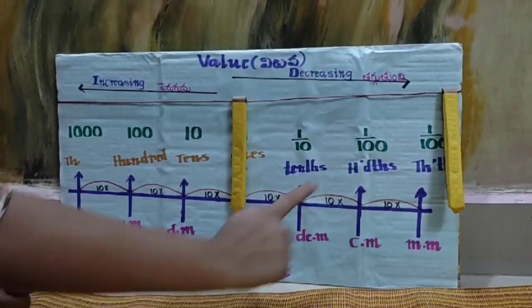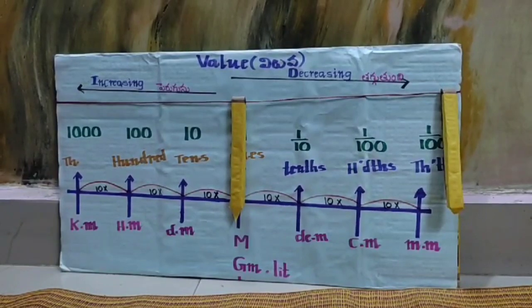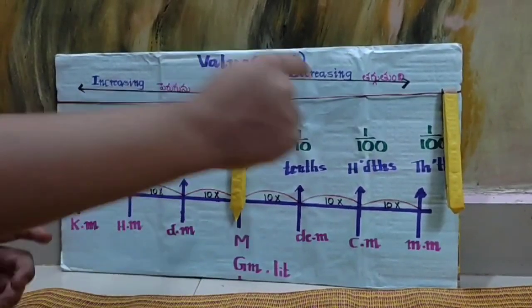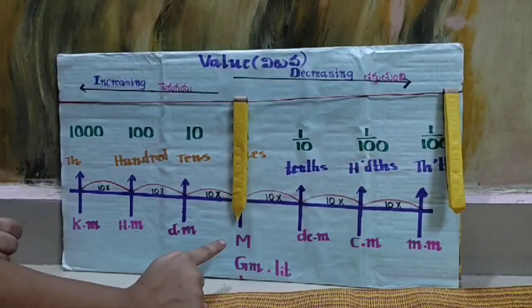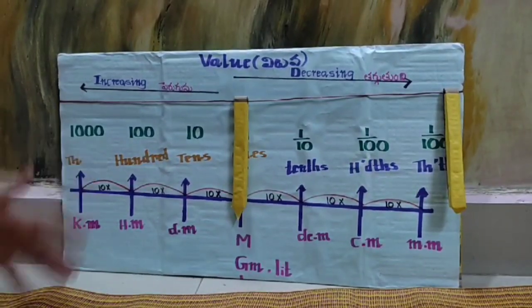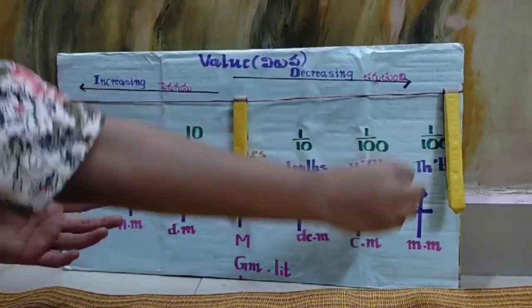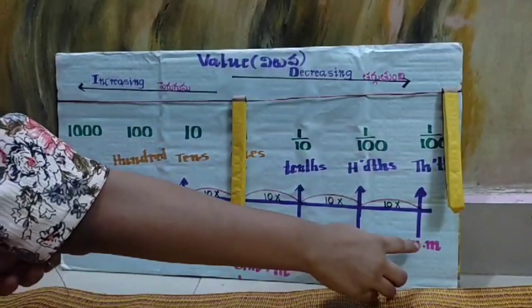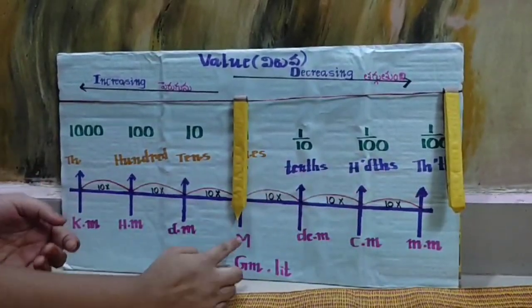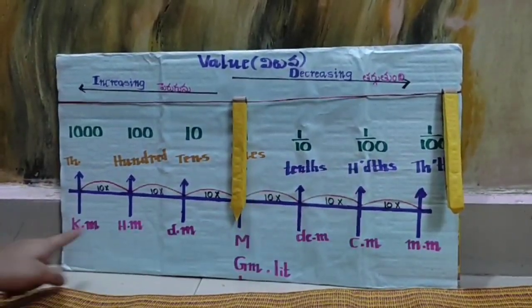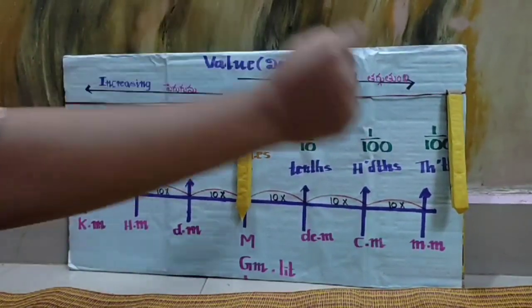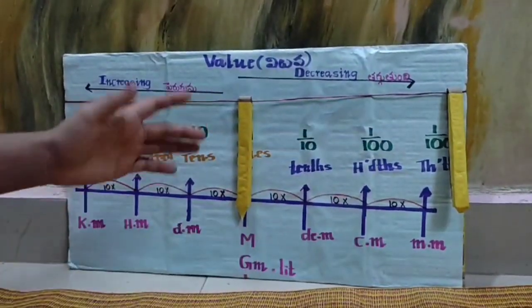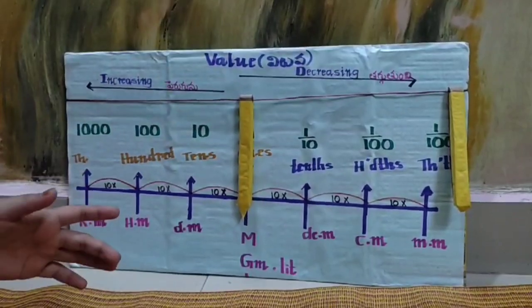If I ask the question in reverse, how many millimeters equal 1 meter? The question is in reverse. I am asking from smaller quantity to bigger quantity. Just now we discussed bigger to smaller, but now I am asking smaller to bigger. Then we should divide the values or places.